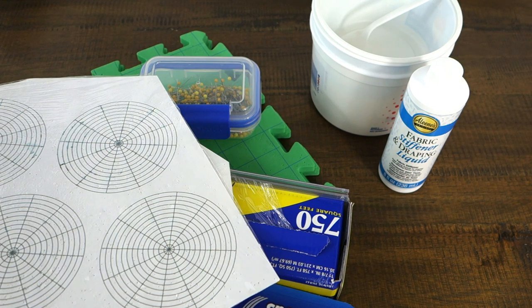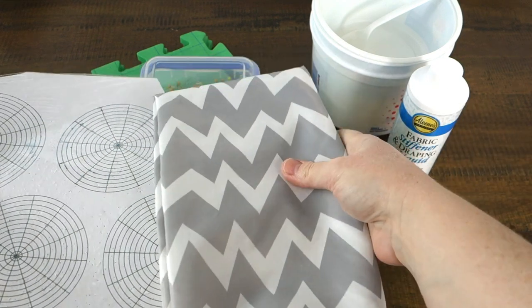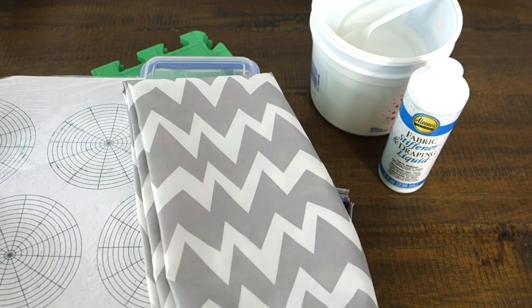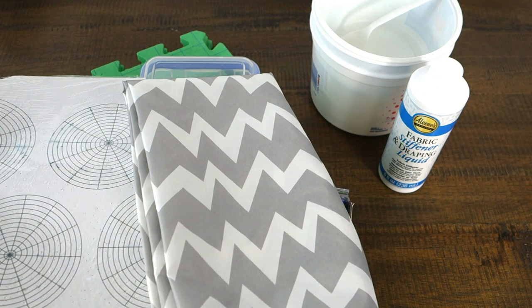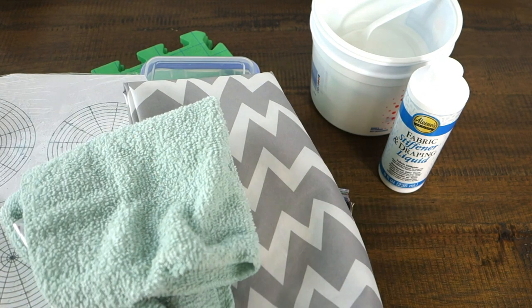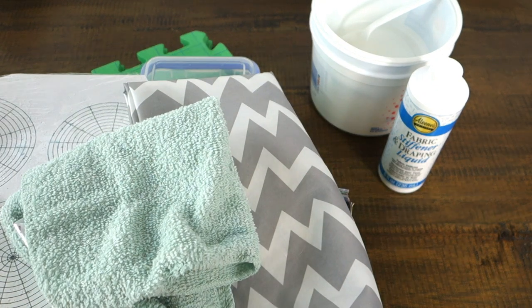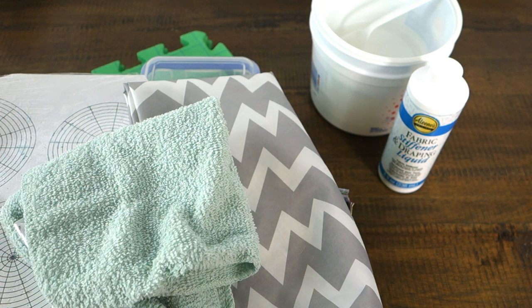You may also want to protect your work surface. This is not particularly messy but I get drops of stiffener on my table sometimes if I don't. So here is a drop cloth that I use and it's handy to have a few towels around to dry and wipe your hands on while you're working.